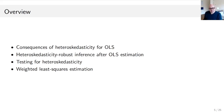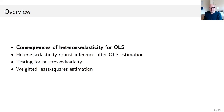This presentation is divided into four parts. First, the consequences of heteroscedasticity for OLS estimation. Second, heteroscedasticity-robust inference after OLS estimation. Third, testing for heteroscedasticity. Fourth, weighted least squares estimation.